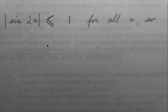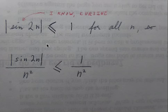So its absolute value is less than or equal to 1. What we can do is divide both sides by n squared, and now we have a statement that shows that 1 over n squared is greater than or equal to the absolute value of sine of 2n over n squared.